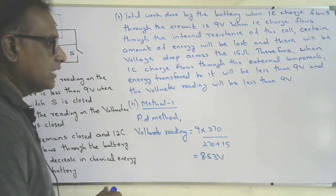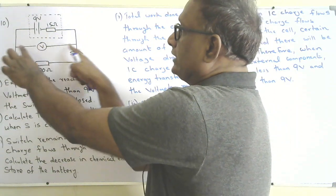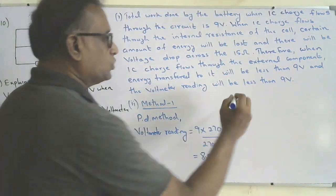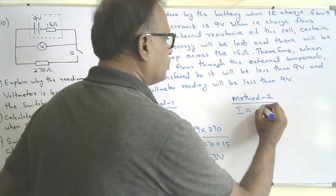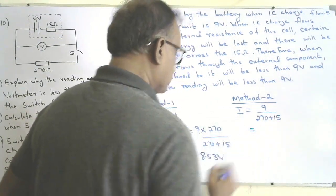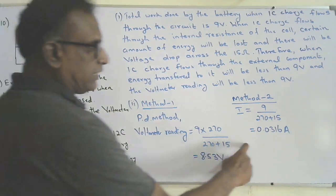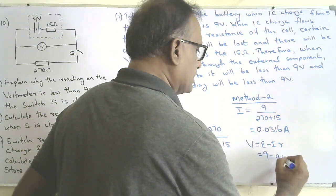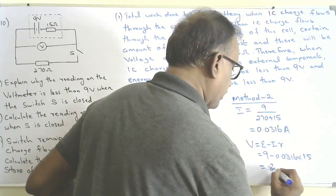That gives 8.53 volt. Method two: use the equation V = E − IR. First find the current: I = EMF over total resistance = 9 over (270 + 15), which gives 0.0316 amperes. Then V = 9 − (0.0316 × 15), giving the same answer of 8.53 volt.